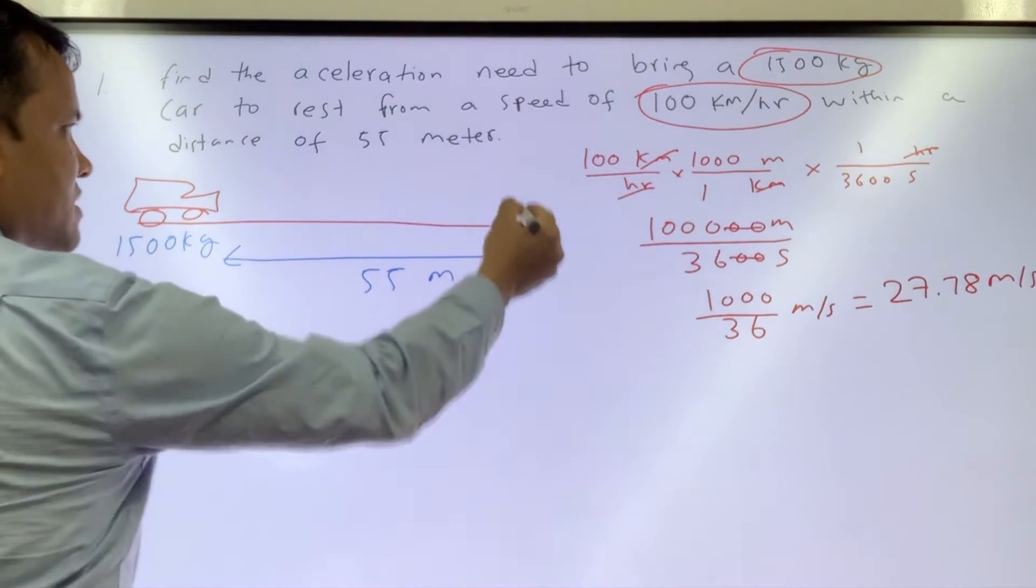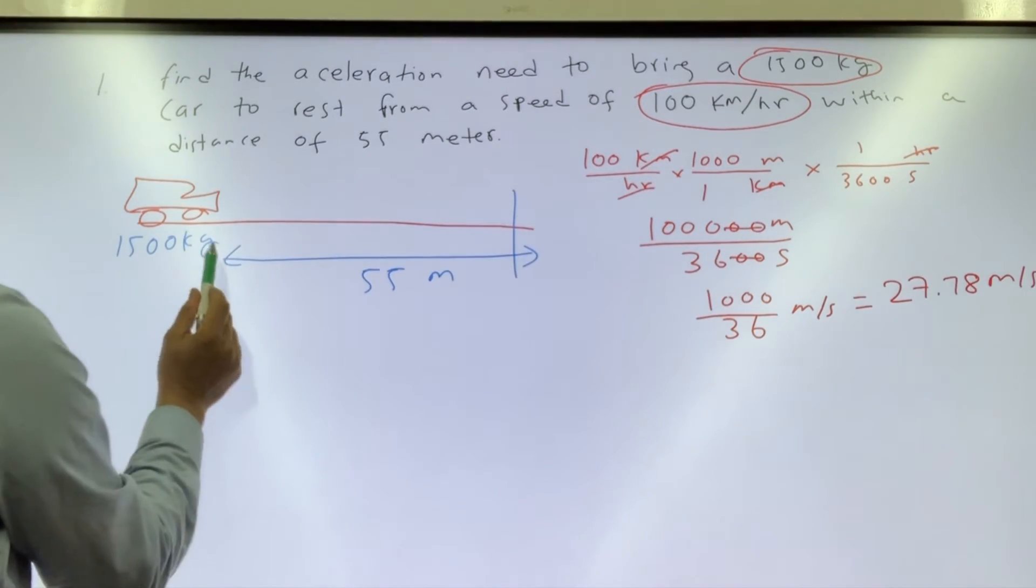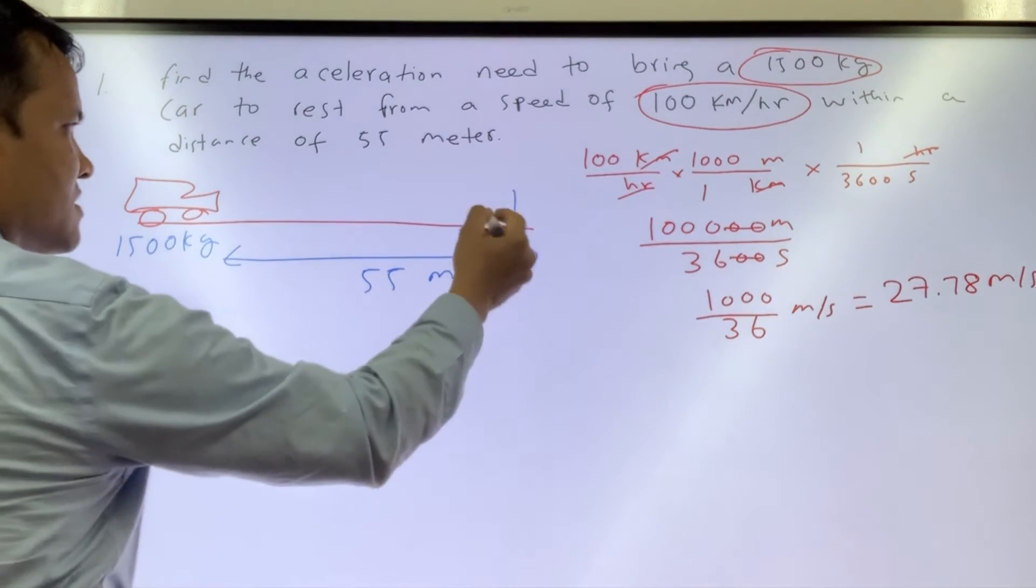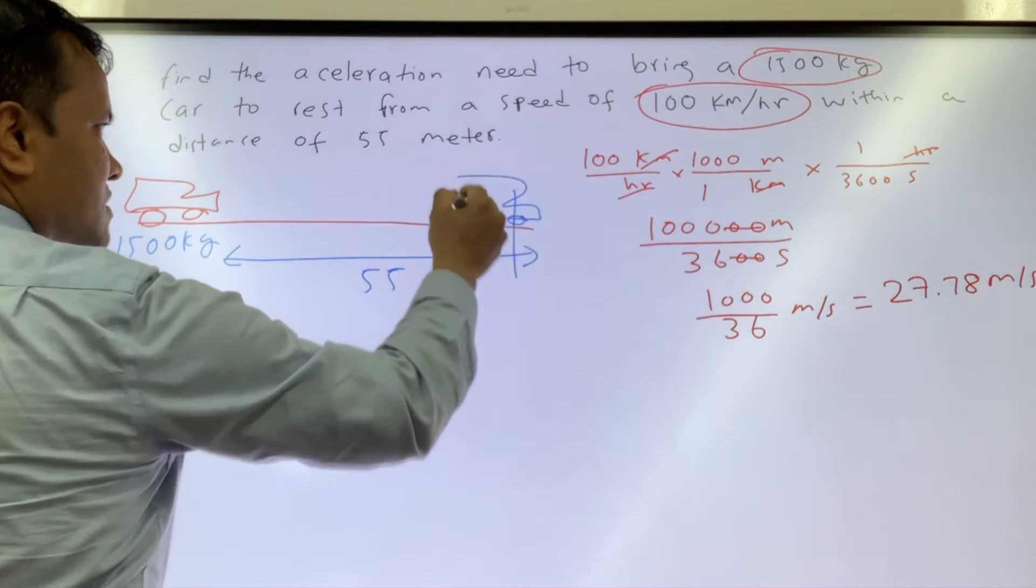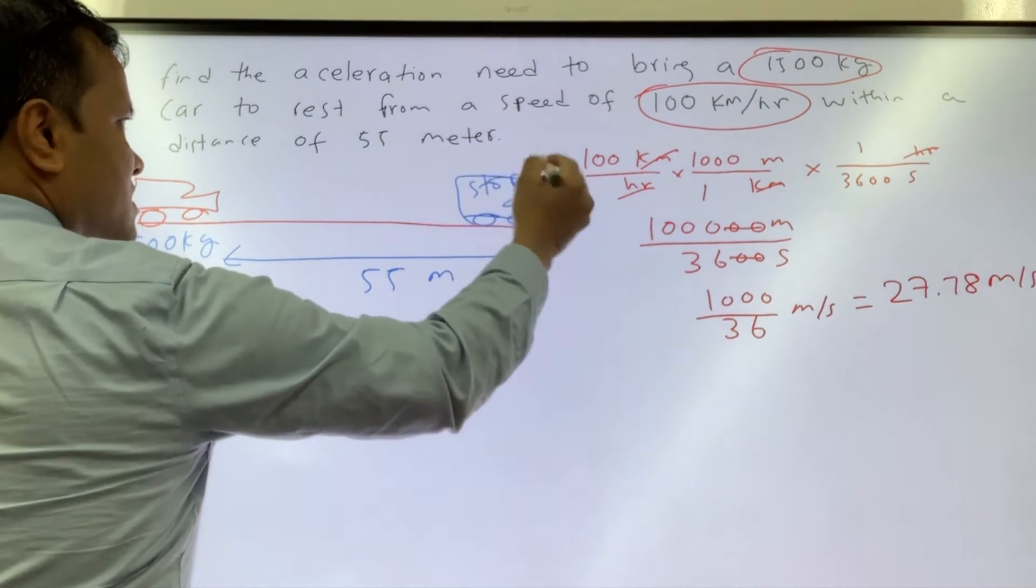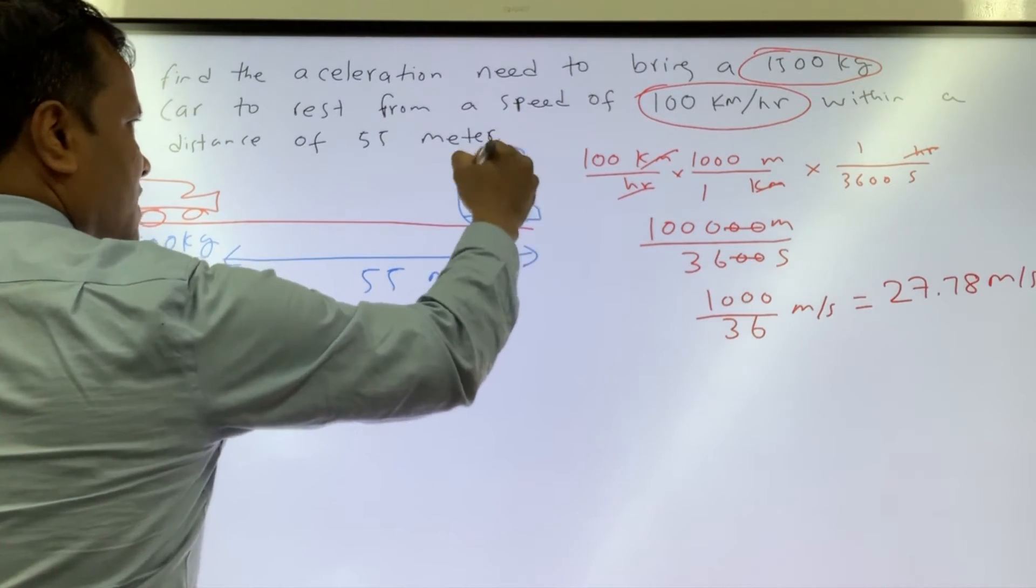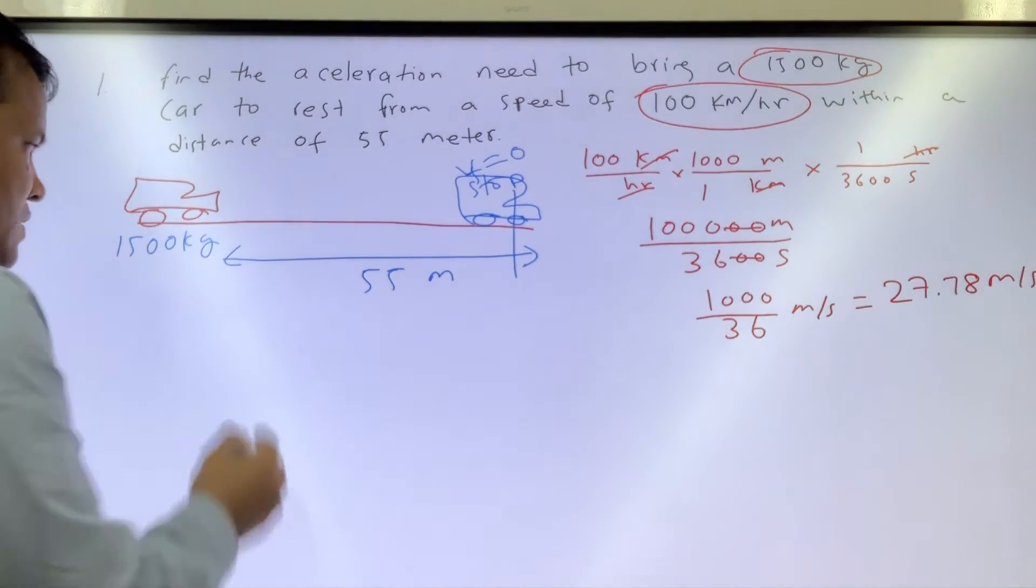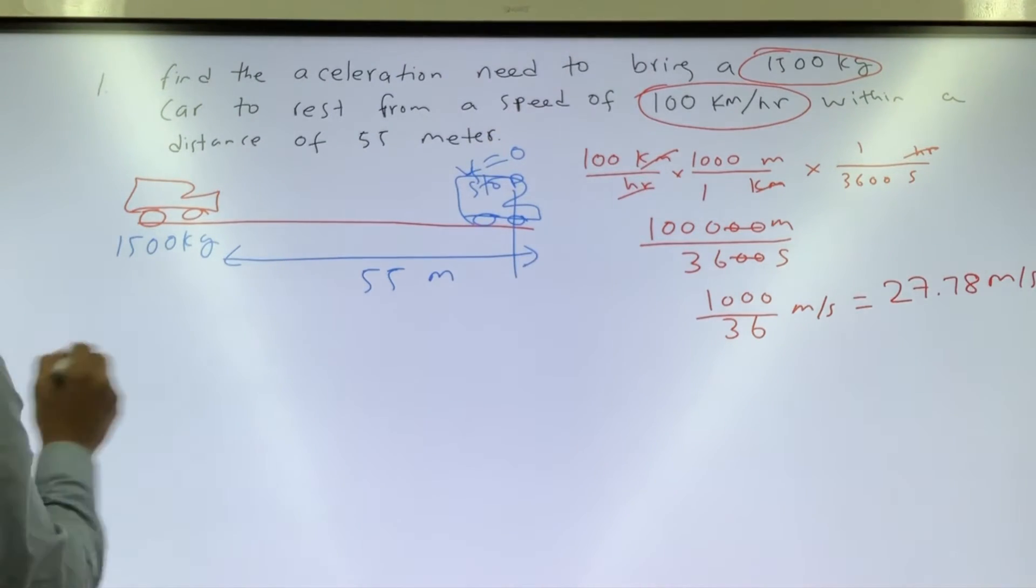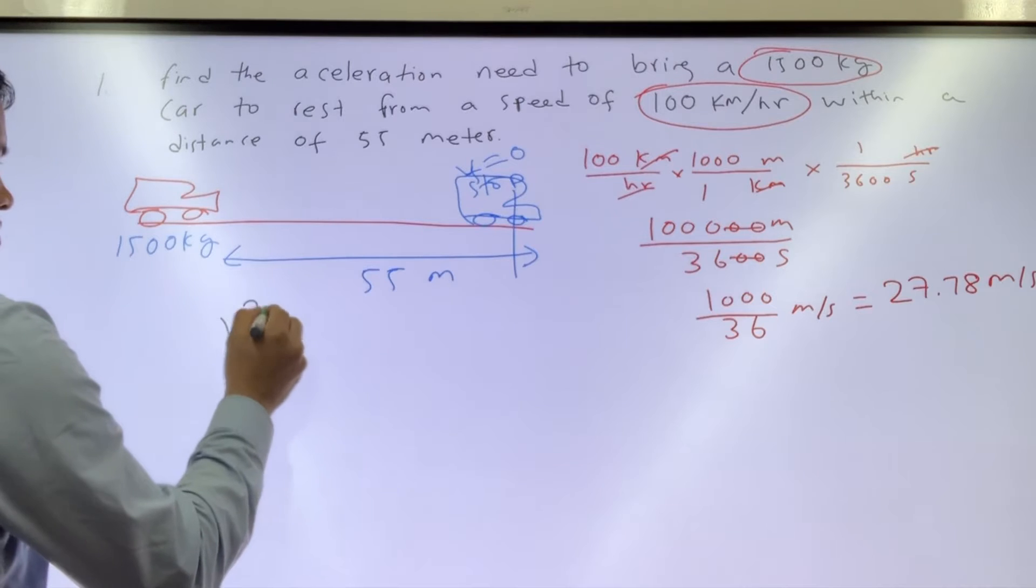Stop means velocity is zero, meaning final velocity is zero. So you know you should write: final velocity squared is equal to initial velocity squared plus 2ad. Final velocity is 0 squared equals...